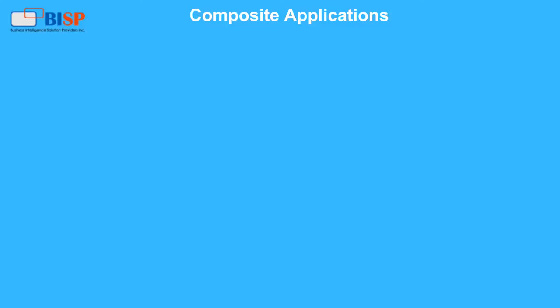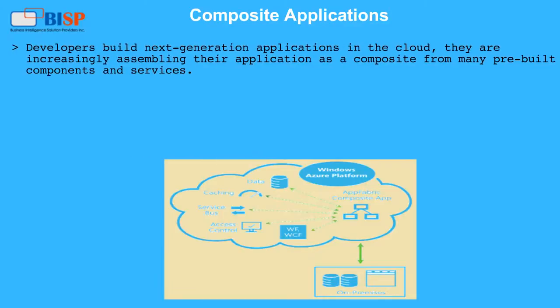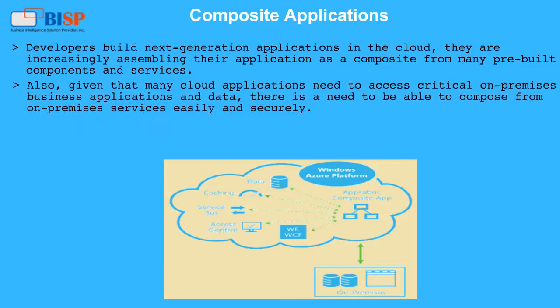Composite Applications: Developers build next-generation applications in the cloud by increasingly assembling their application as a composite from many pre-built components and services. Also, given that many cloud applications need to access critical on-premises business applications and data, there is a need to be able to compose from on-premises services easily and securely.